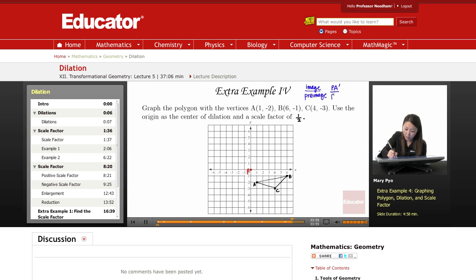And then the pre-image, just P, A, right, to the original. And our scale factor is 1 over 2. That means our pre-image is twice the measure of our image. The pre-image is going to be bigger.